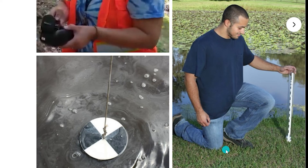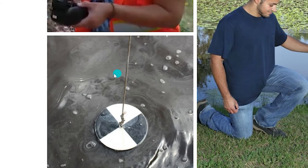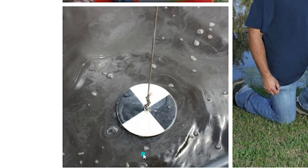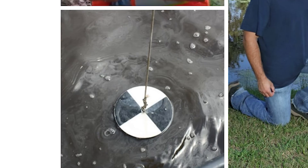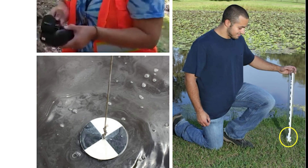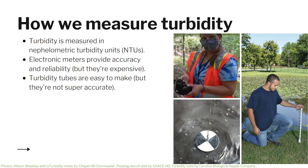A turbidity tube is a clear tube with a Secchi disc at the bottom. Secchi discs were created in 1865 and were first used to measure turbidity in deep waters — the disc is attached to a pole or line and slowly lowered into the water; the depth at which it's no longer visible is the measure of turbidity. With a turbidity tube, you fill the tube with your water sample and slowly release water from the valve at the bottom until the disc becomes visible, then measure the water depth in centimeters and use a chart to convert it to NTUs. The measurements are somewhat subjective depending on your eyesight and lighting conditions, but turbidity tubes are reliable enough to be used in programs across the country.